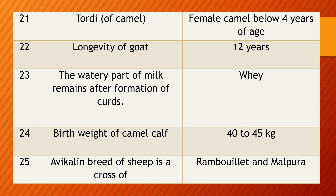Question 23. The watery part of milk that remains after the formation of curd — you observe this frequently when we make curd; if we remove the curd, the watery portion remains. What is that? It is called whey. Question 24. Birth weight of camel calf. Answer: the weight is 40 to 45 kg.